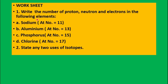Now here is a worksheet for you. The atomic numbers of sodium, aluminium, phosphorus, and chlorine are given. Using this, you have to write how many protons, neutrons, and electrons are present in each element. Also state any two uses of isotopes.